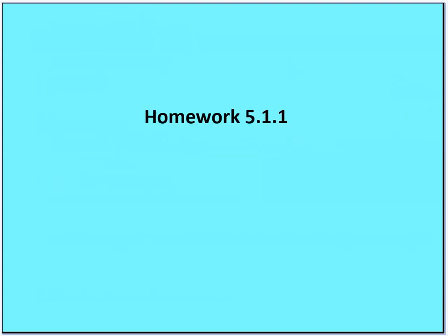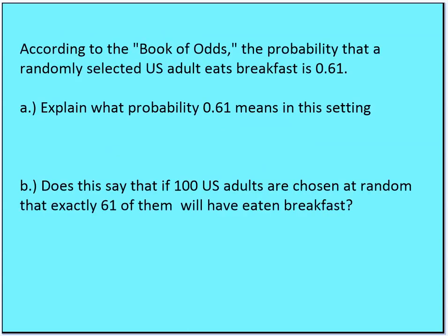This brings us to homework problem 5.1.1. According to the Book of Odds, the probability that a randomly selected U.S. adult eats breakfast is 0.61. Explain what probability 0.61 means in this setting. Does it say that if 100 U.S. adults are chosen at random, exactly 60 of them will have eaten breakfast?